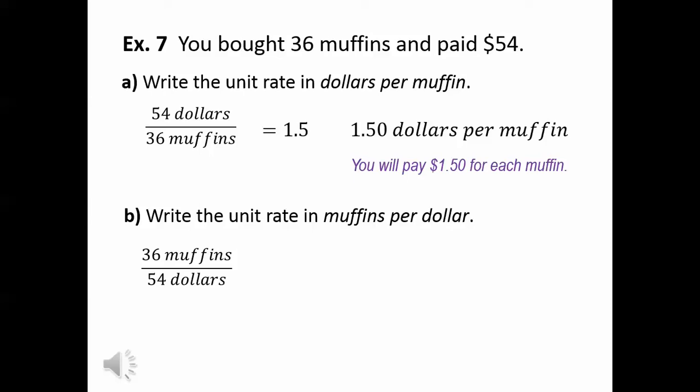When we do the division there, we get .6 repeating. So that means we have .6 repeating muffins per dollar. What that really means is we'll get 2 thirds of a muffin for each dollar that we spend.